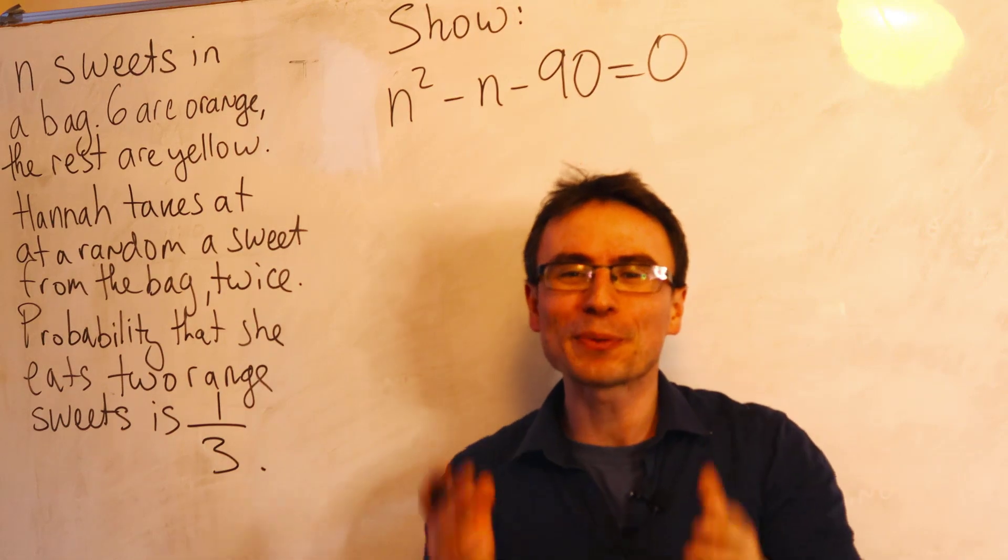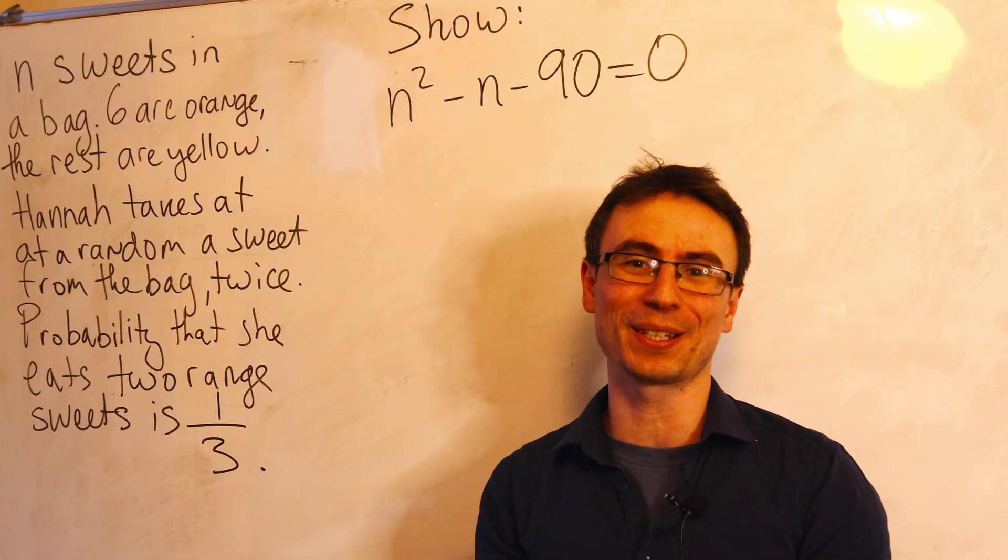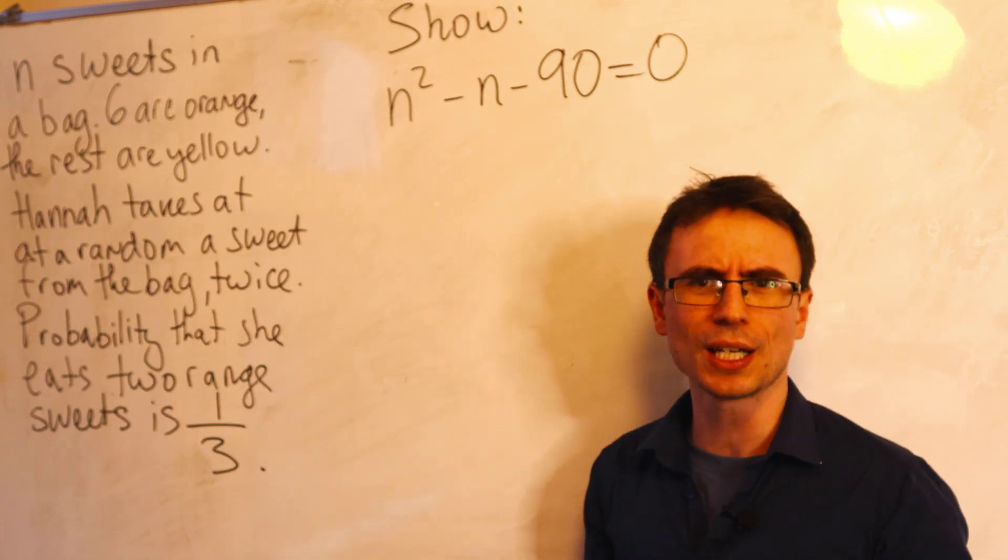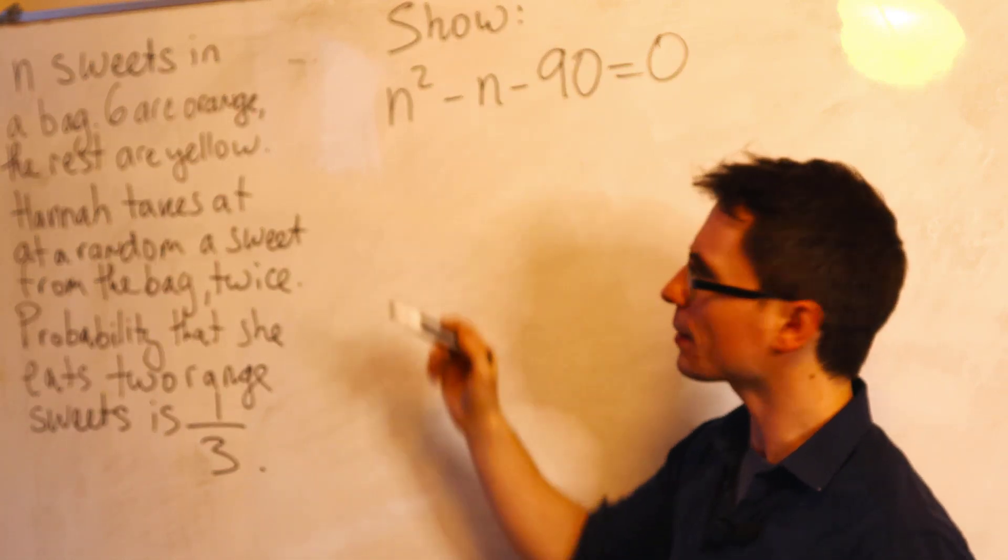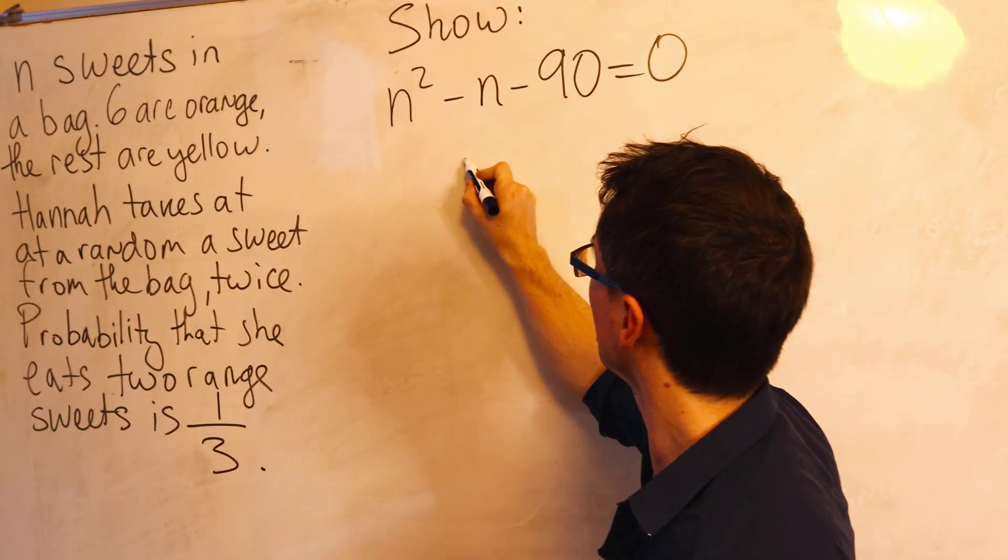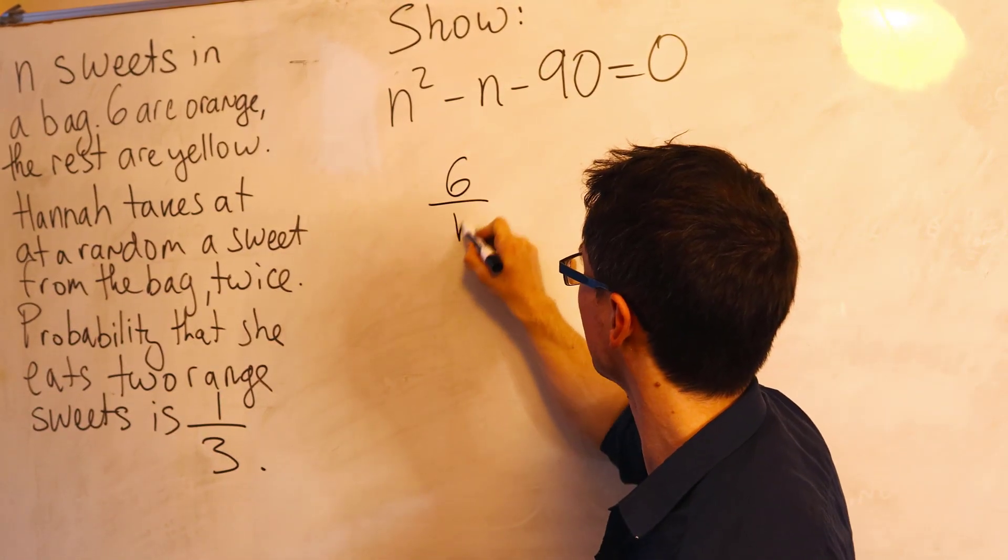As always with math questions, we have to start with the fundamentals. What is the probability that Hannah will take an orange sweet initially? Well, there are six of them in a bag full of N sweets. So the probability of that will be six over N.